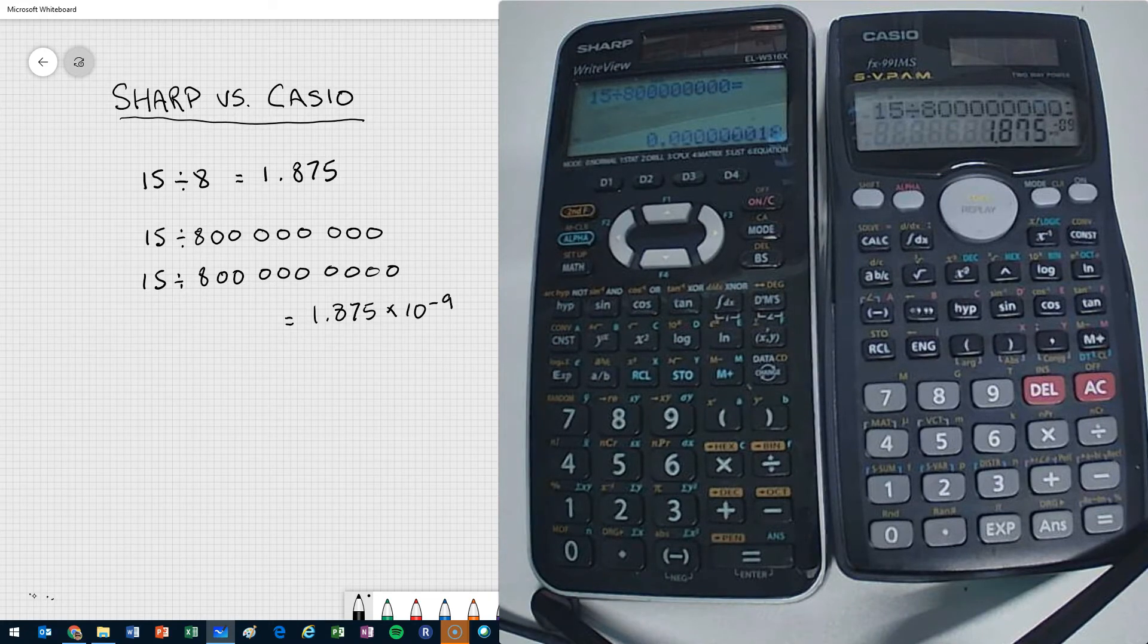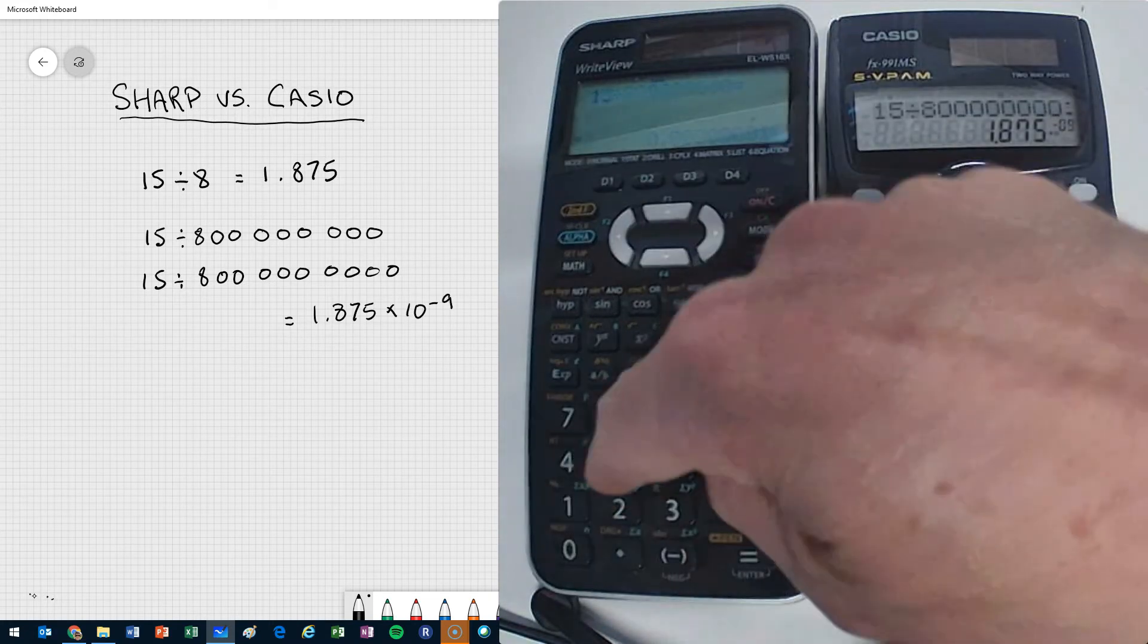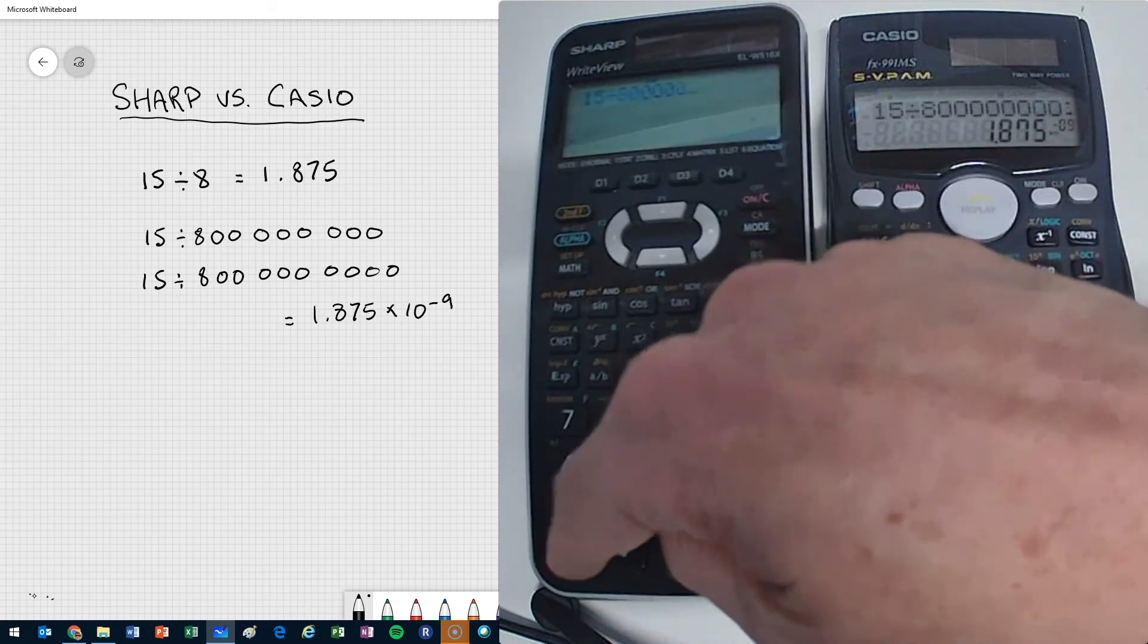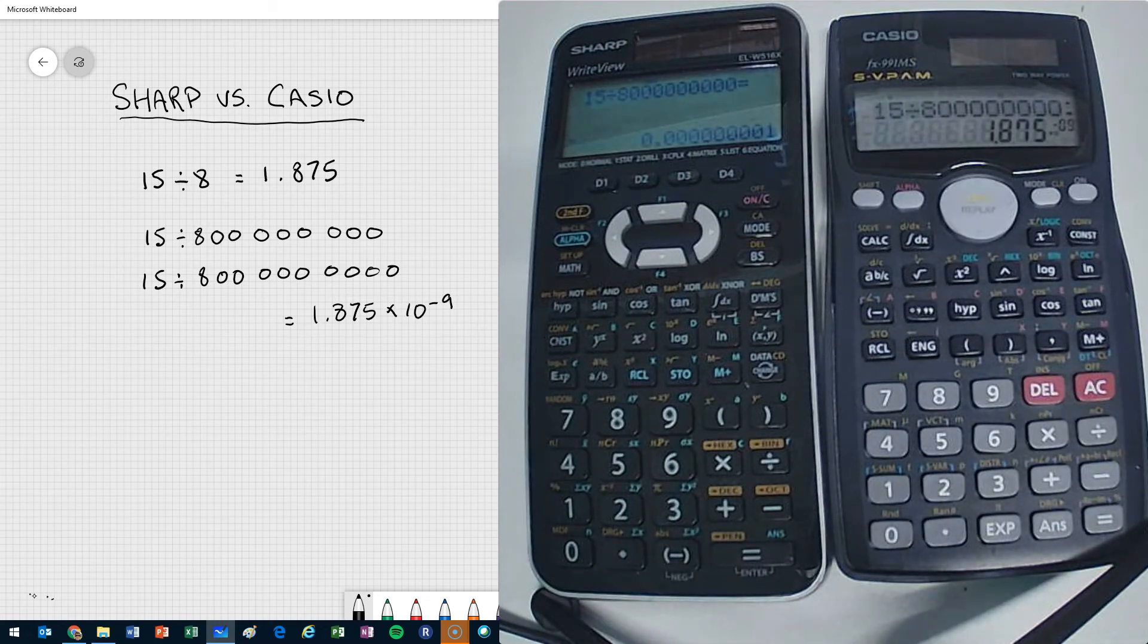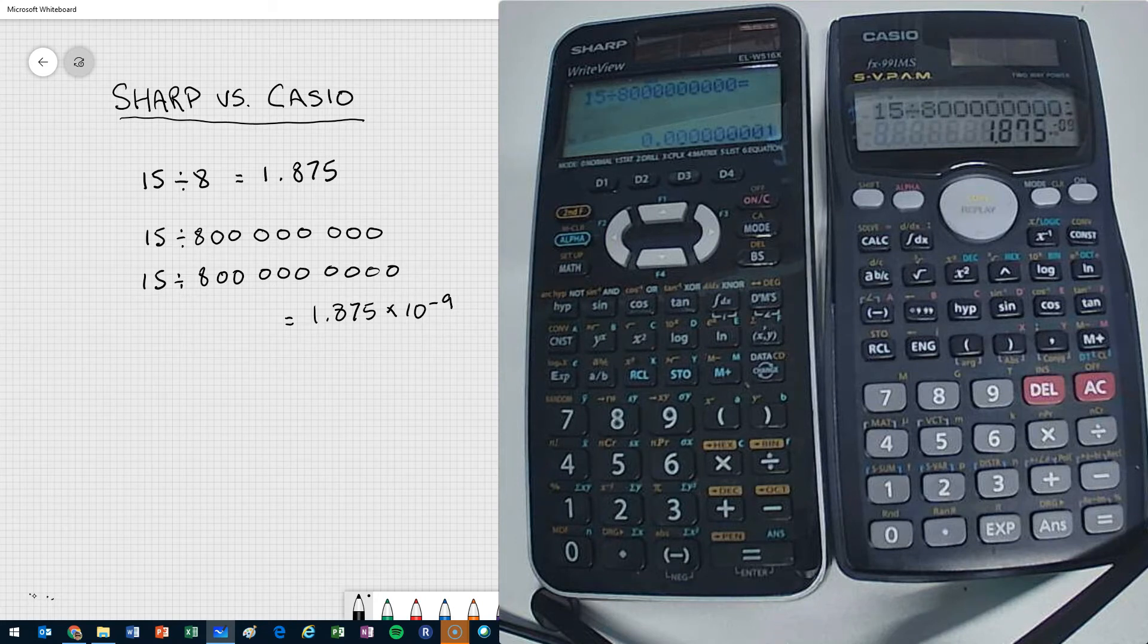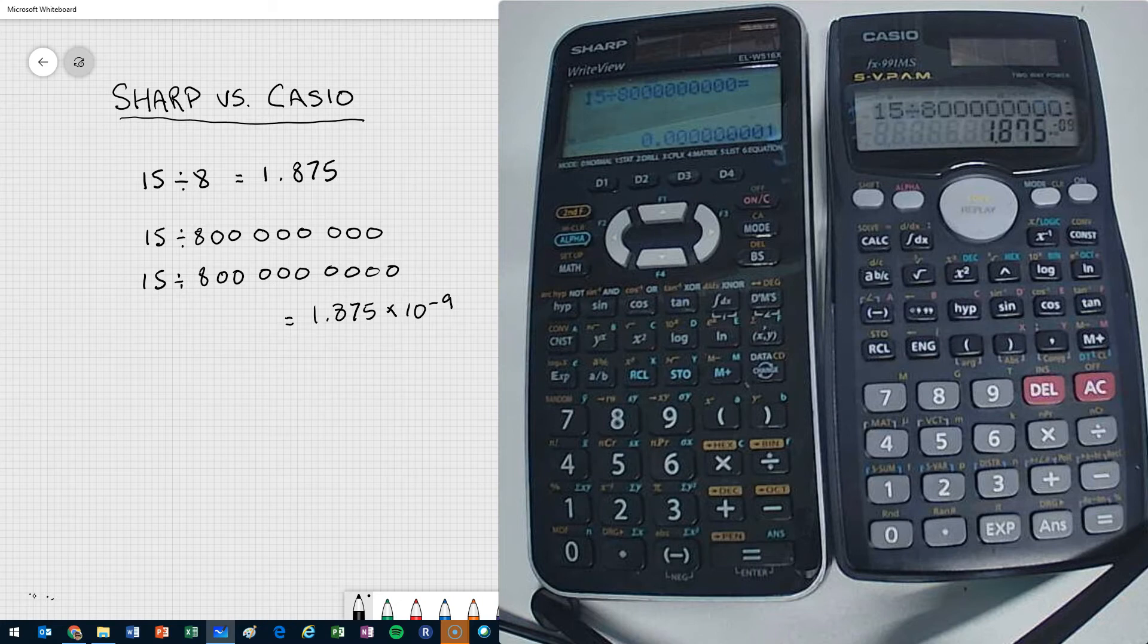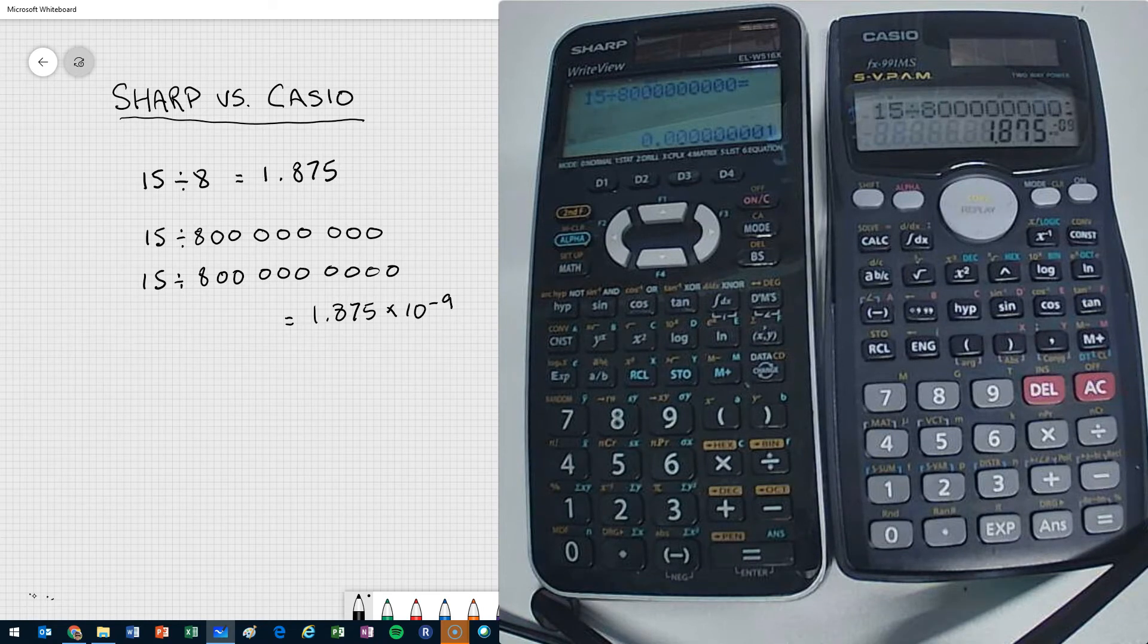Let's see what the SHARP gives me. 0.00000001. So if I was to write down the number that the SHARP gave me as the default answer that it gives, my answer's probably almost off by double compared to what it should be, or 50%.